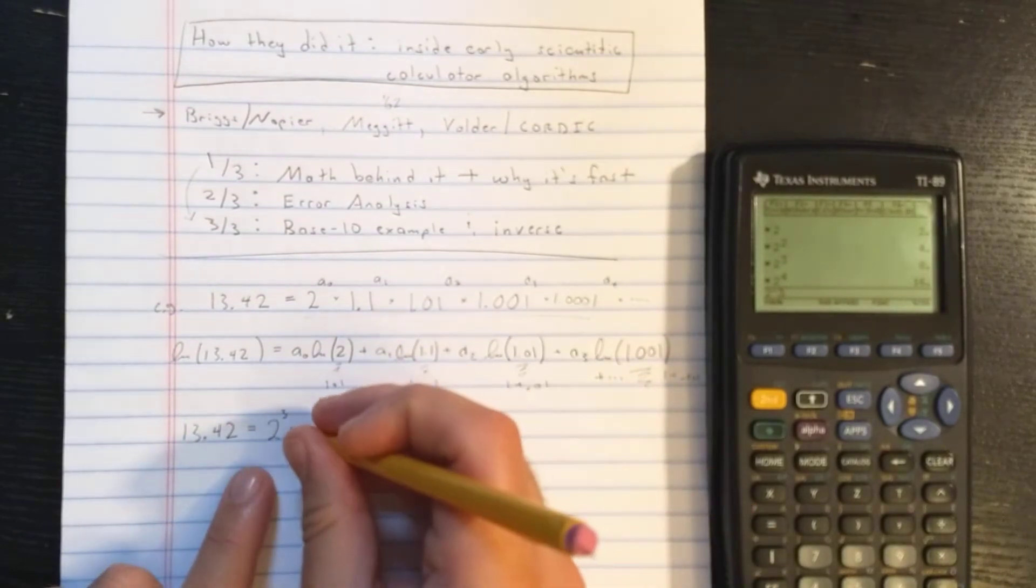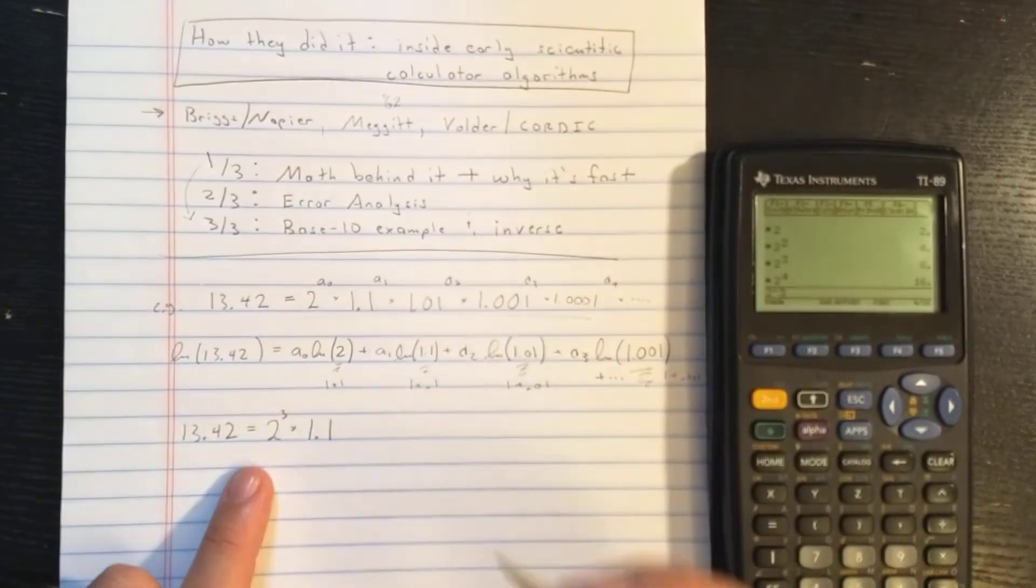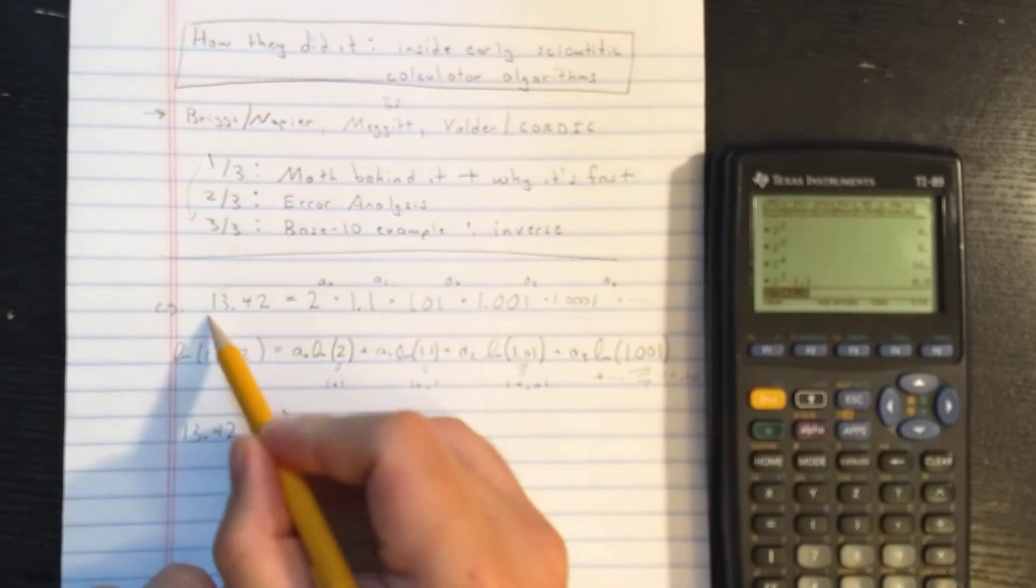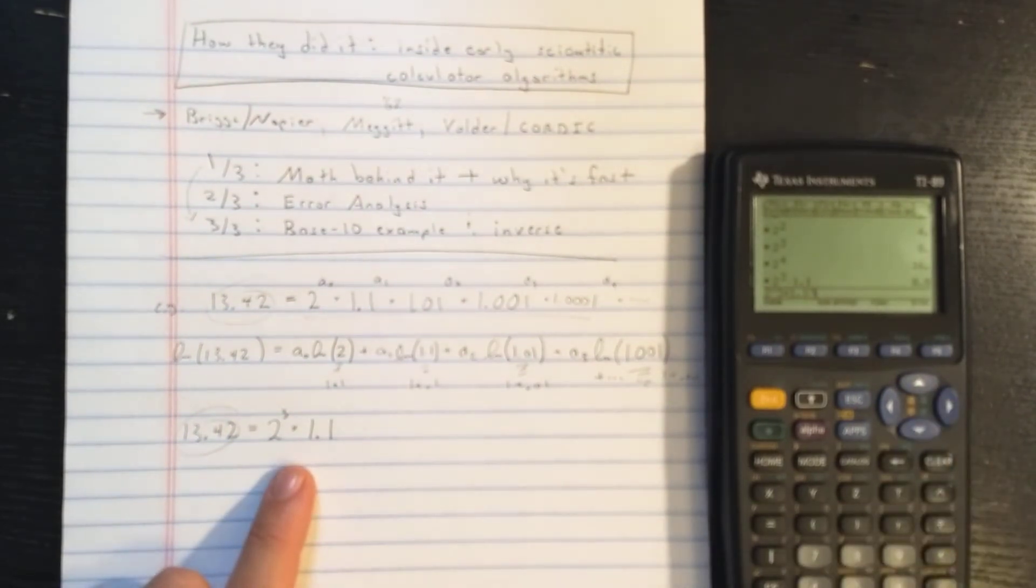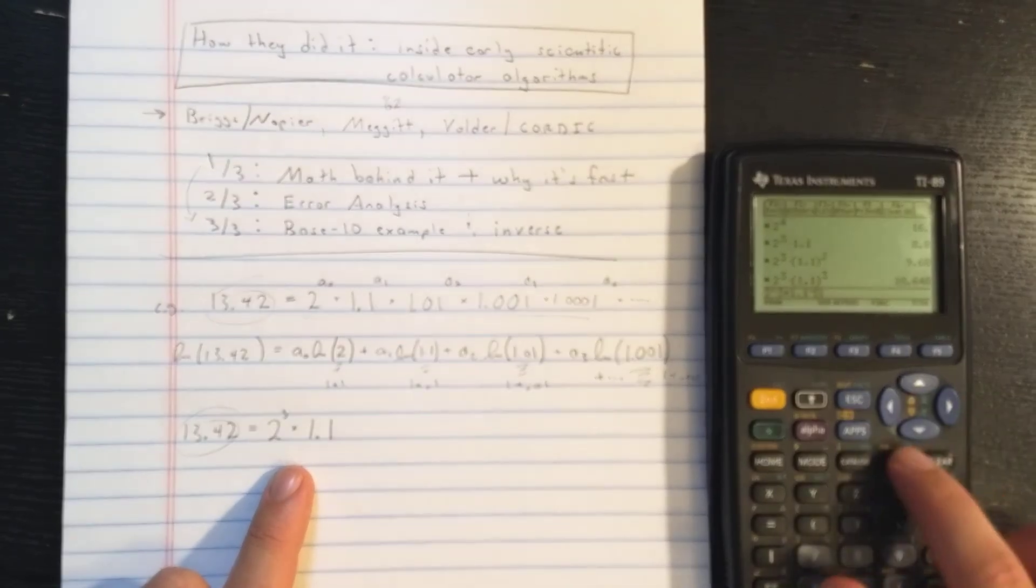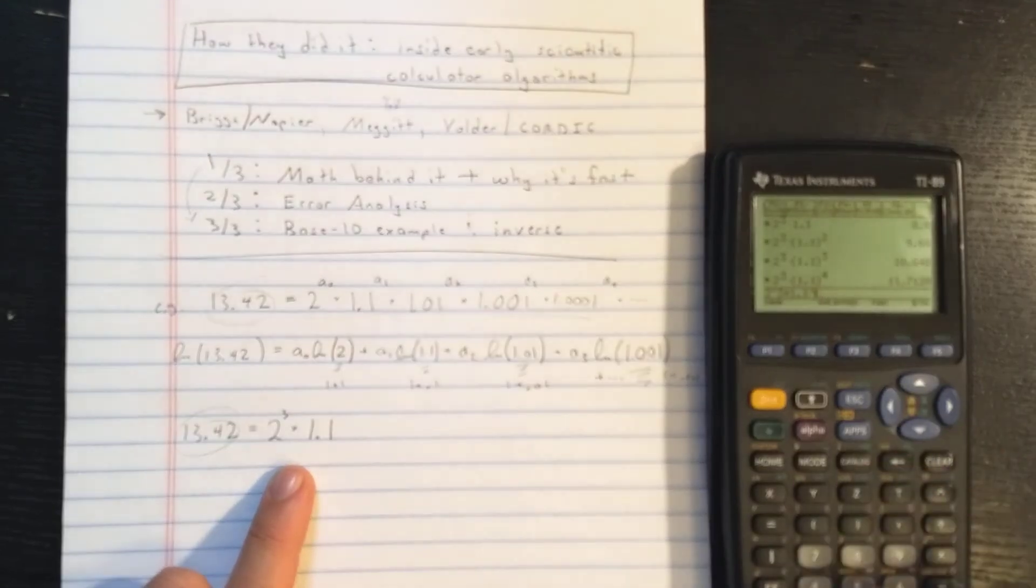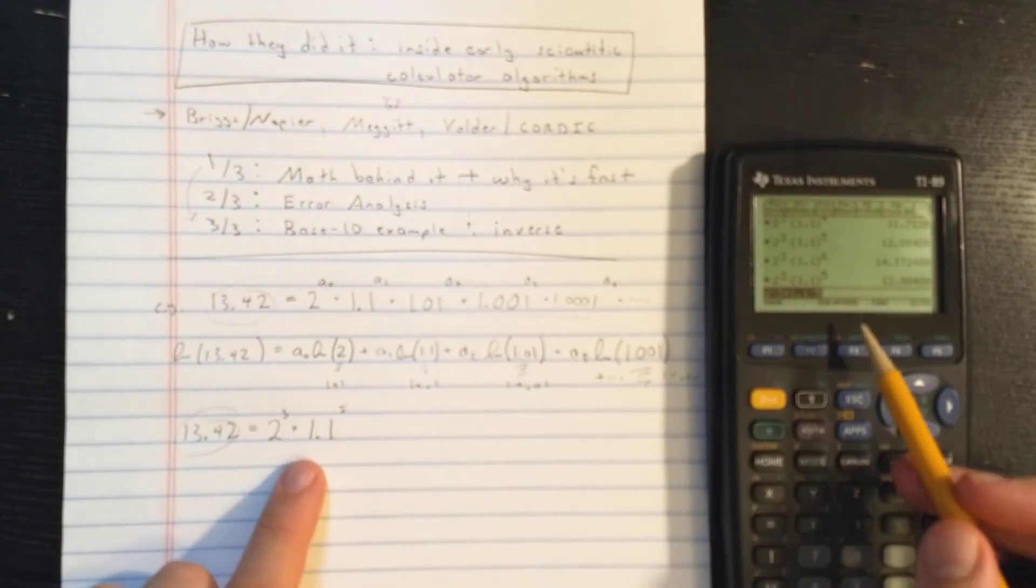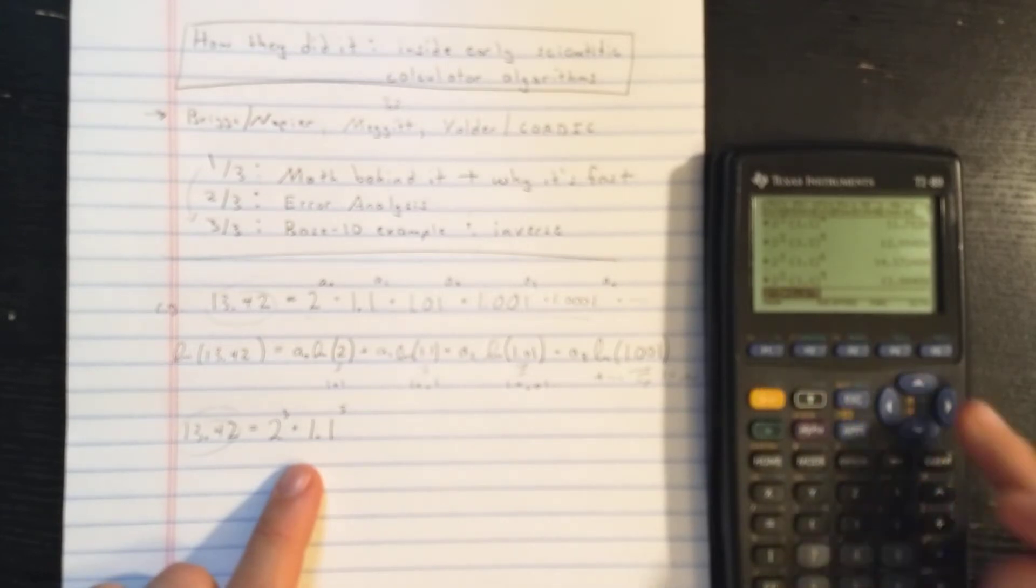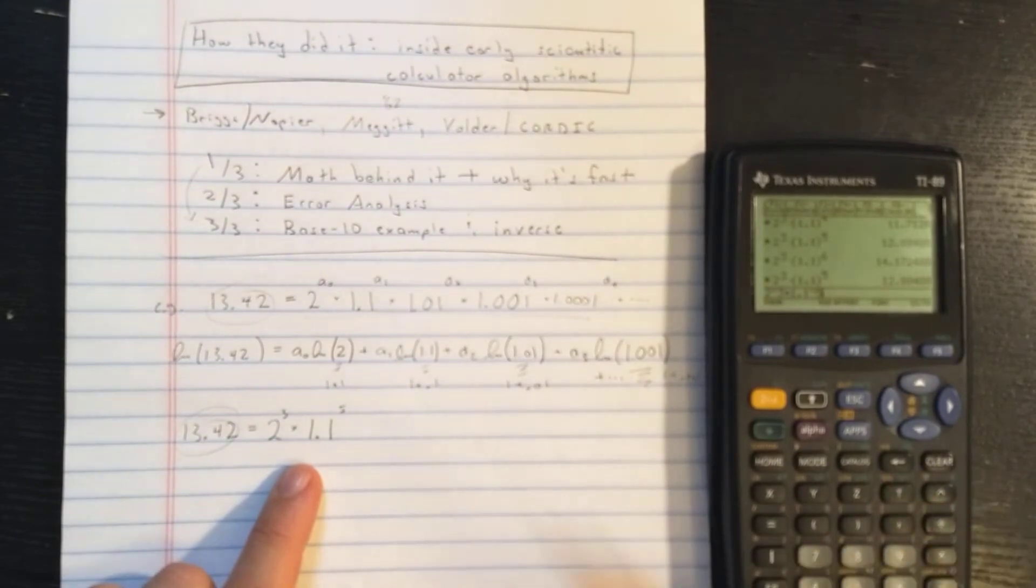Now, once I've determined that, I go to the next base, 1.1. So let's see, 2 to the 3rd times 1.1, that's 8.8. Remember, I'm keeping an eye on the 13.42. Let's see. Not big enough yet. 1.1 to the 2, 1.1 to the 3, 1.1 to the 4, 1.1 to the 5, 1.1 to the 6th is now too big. So 1.1 to the 5 is what I'm going to use. So the trick here is, each time I'm multiplying by 1.1, before each time I was multiplying by 2, to determine the next one, each time I multiply by 1.01 until I go over the target number.